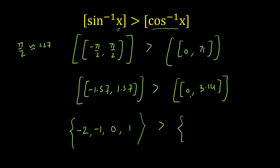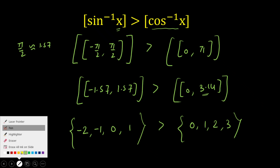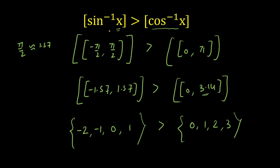Now for the right-hand side: the range of cos inverse of x is from 0 to π, which is approximately 3.14. Taking the GIF of values from 0 to 3.14, we get 0, 1, 2, and 3. More than 3 is not possible because GIF of 3.14 is 3.